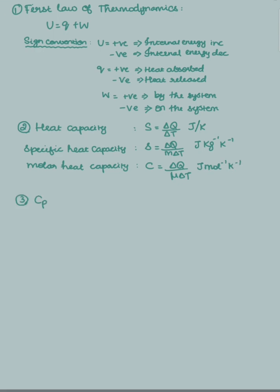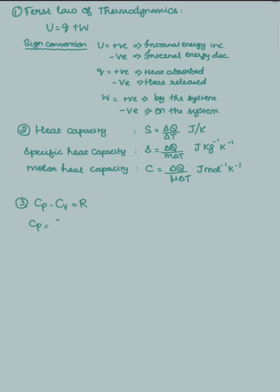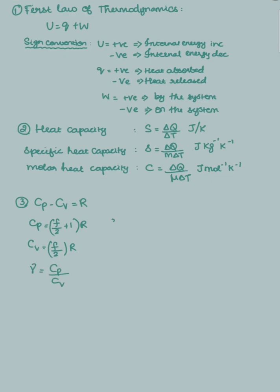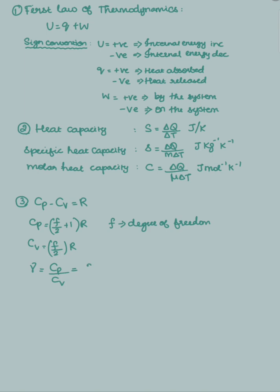Coming to the next point, Cp minus Cv is equal to R — this is an important relation. Here, Cp will be (F/2 + 1) × R, Cv is (F/2) × R, and gamma is Cp by Cv. Here F is degrees of freedom. Gamma can also be written as 2 by (F + 2), which simplifies accordingly.